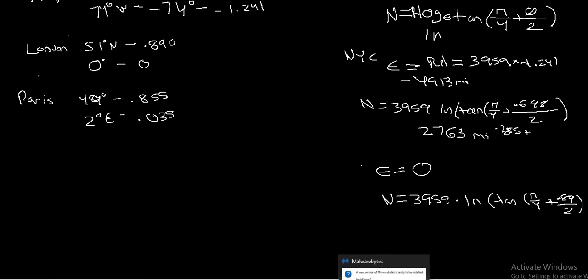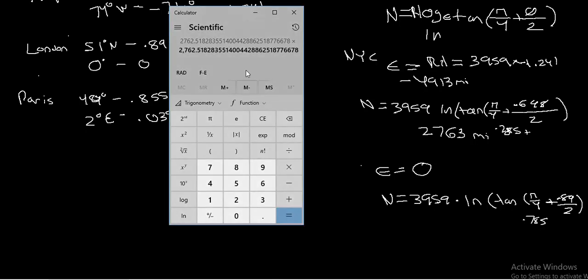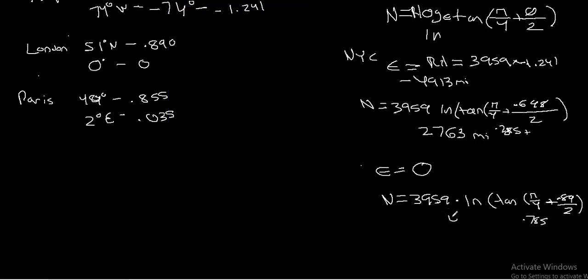So let's pull out our calculator again. We know that pi over 4 is 0.785. We can clear the previous problem. 0.89 divided by 2, add to that 0.785. We take the tangent of that. Then we take the natural log of that. Then we multiply that by 3,959, and we get 4,104.